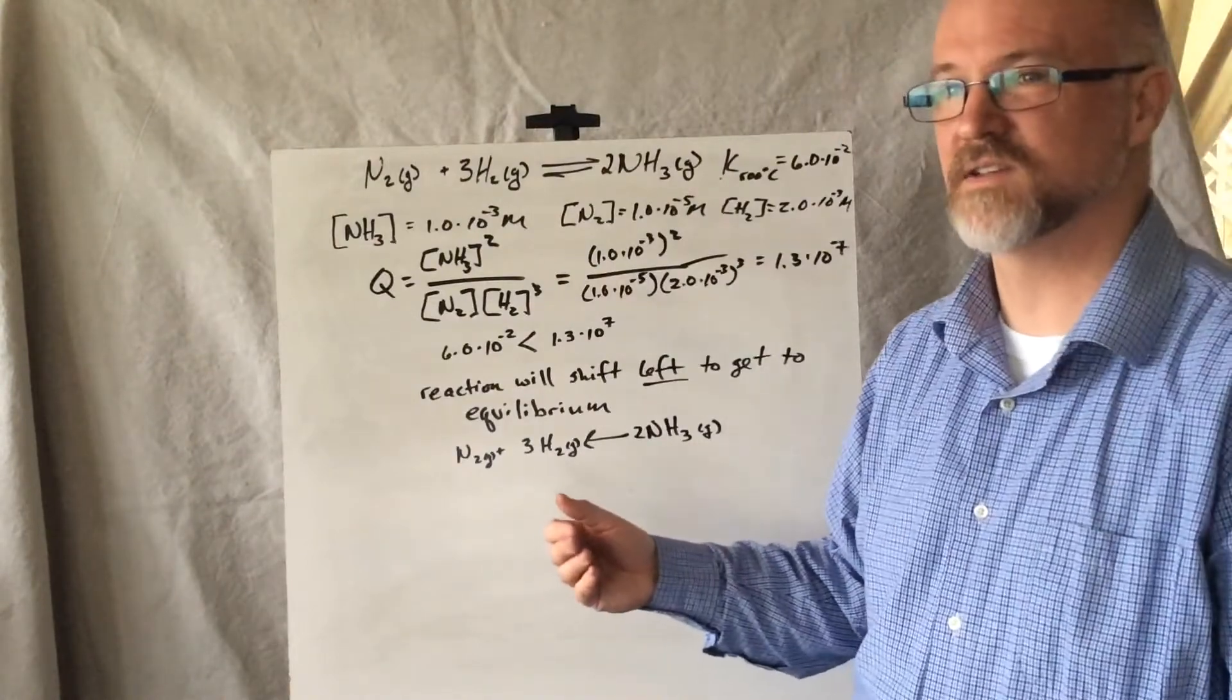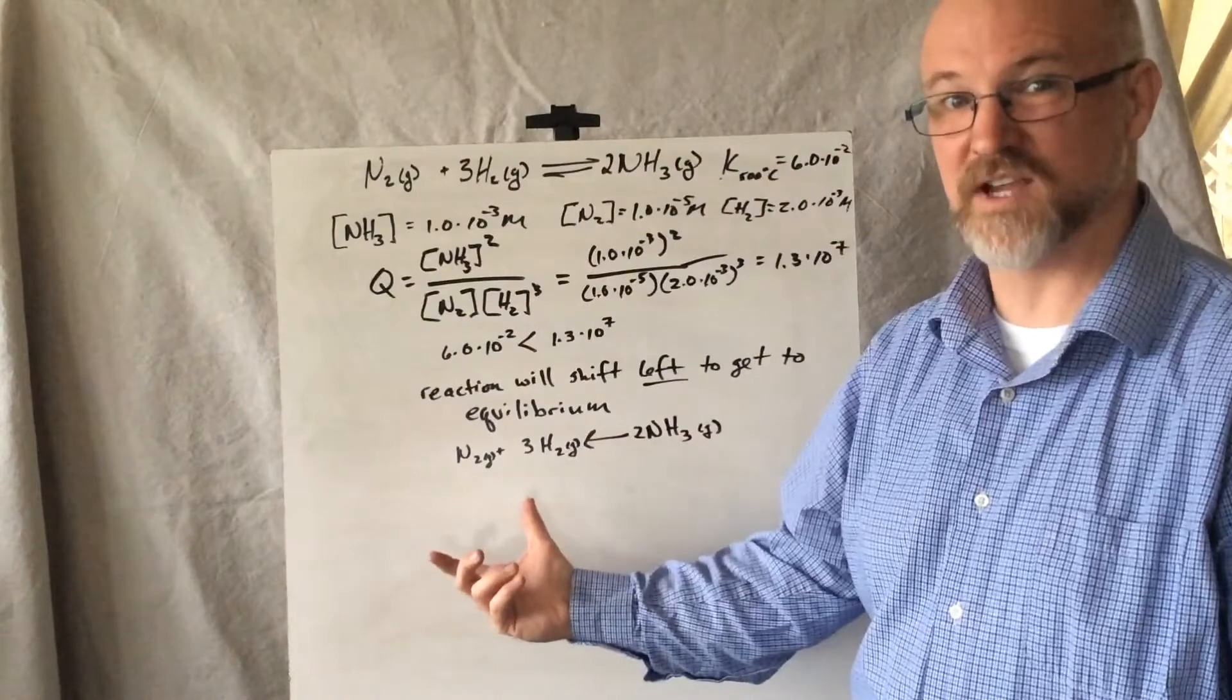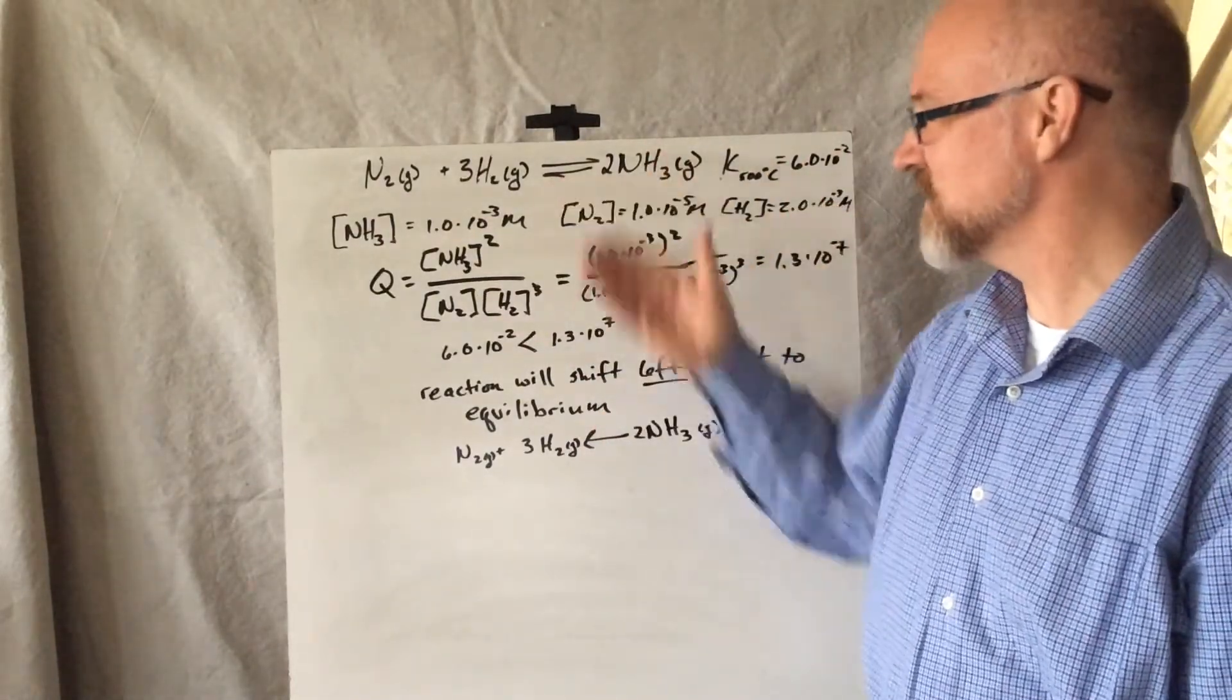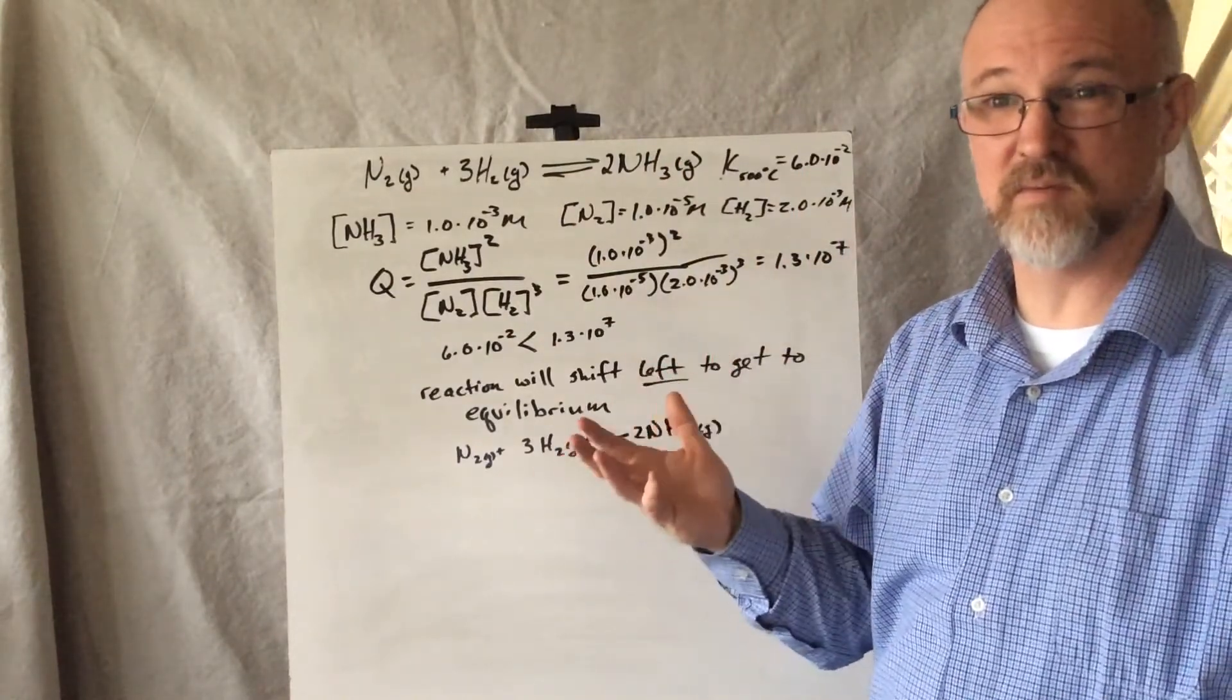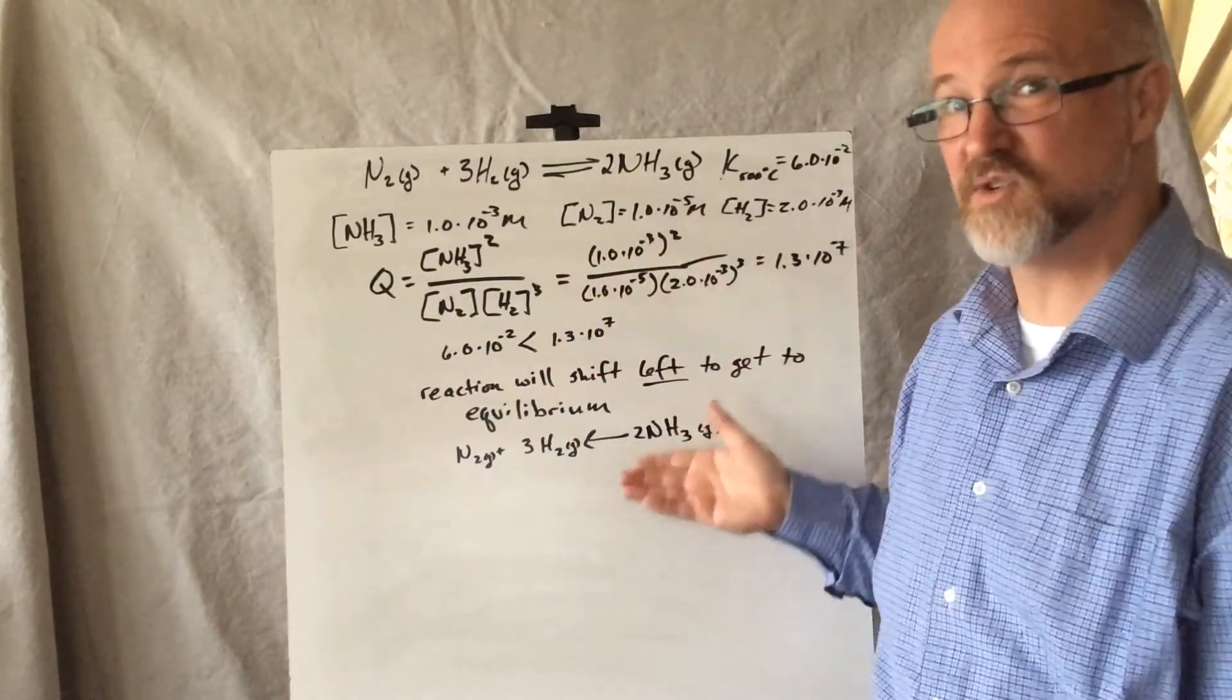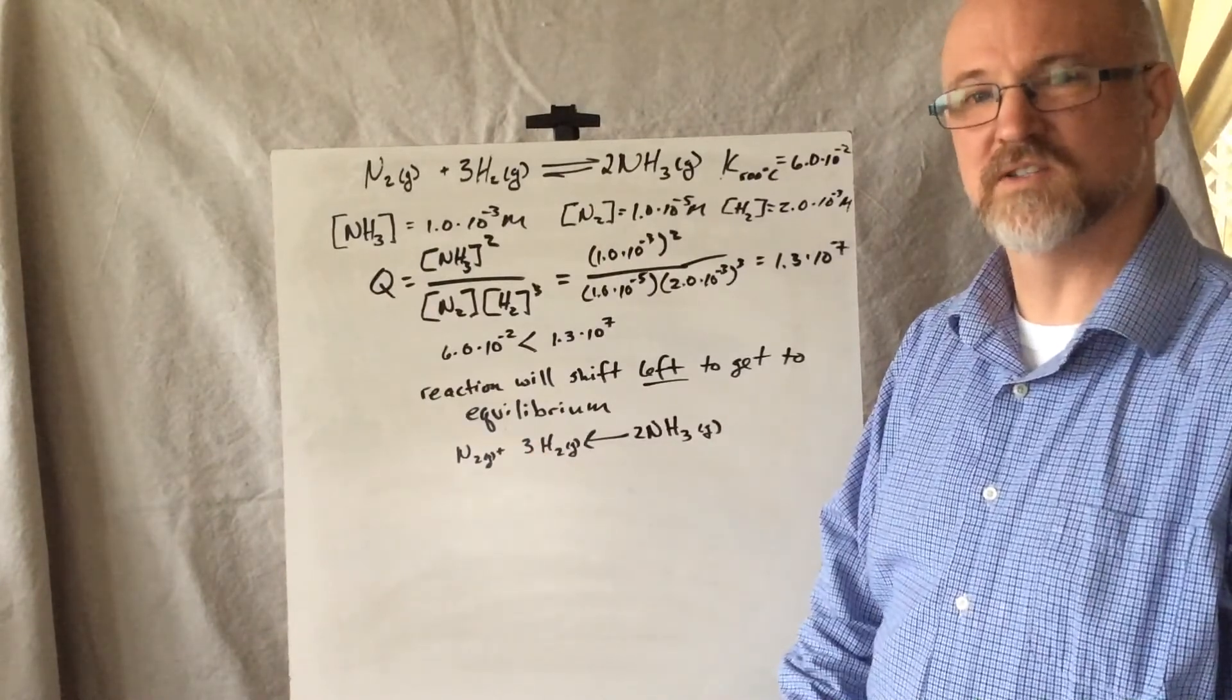So what does that tell us? That tells us that the reaction needs to shift left to get to equilibrium. Ammonia is going to degrade into nitrogen gas and hydrogen gas in order to get to the equilibrium point. If, with different concentration values, I had an answer that was the same, then we'd already be at equilibrium. If I had one that was much smaller than 6.0 times 10 to the negative 2, then the reaction would continue forward to make more ammonia. But in this particular situation, I have more ammonia than there will be at equilibrium. So to get to equilibrium, it's going to move to the left.